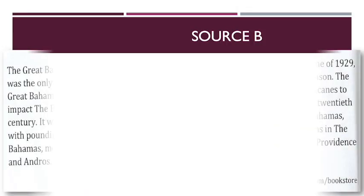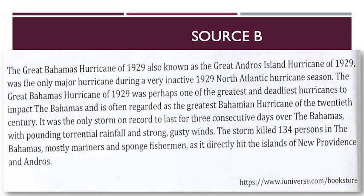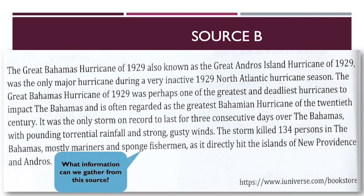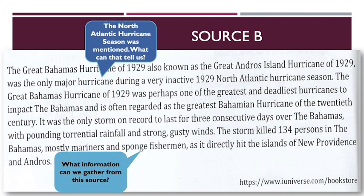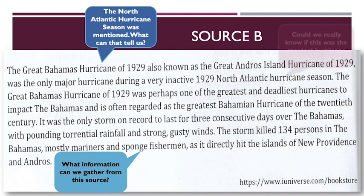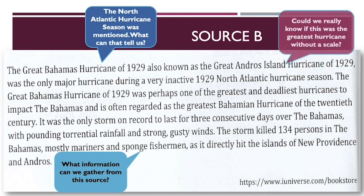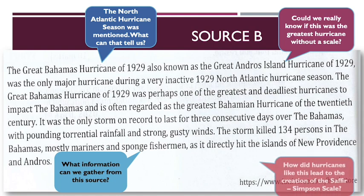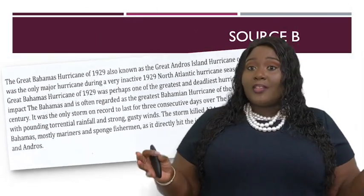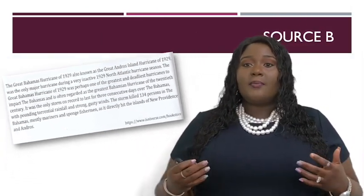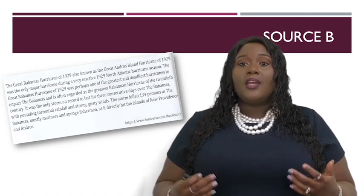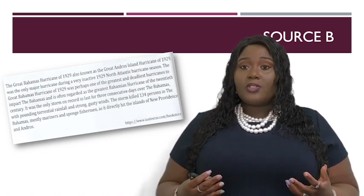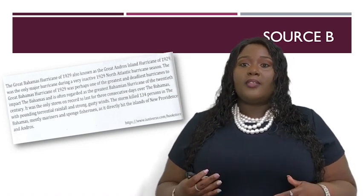Source B covers the North Atlantic hurricane season. Ask yourself: What can we gather from this source? Can we really know that this was the greatest hurricane if there was no scale created? Could hurricanes like this have led to the creation of the Saffir-Simpson scale? Source B has lots of information that can help you build strong content for your answer to question one.